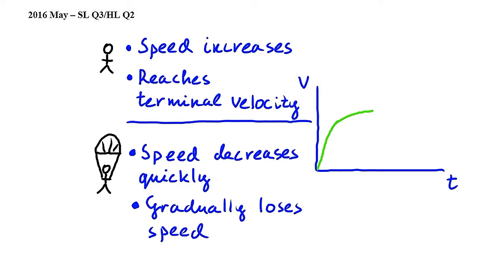As she opens her parachute, her speed drops very quickly, because air resistance is increased by a lot due to the open parachute. On the graph, this means that there will be a sharp drop in velocity.